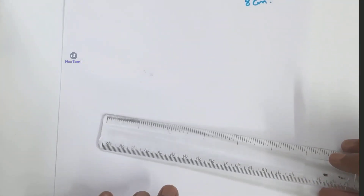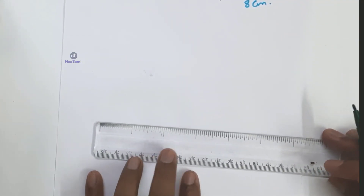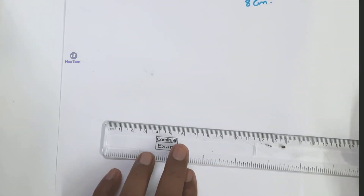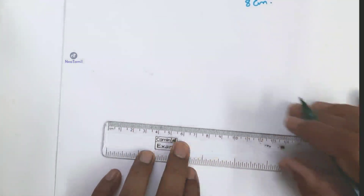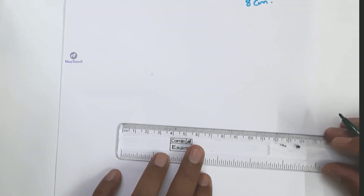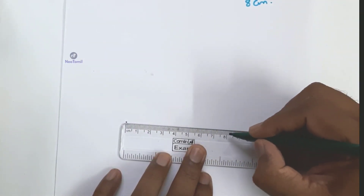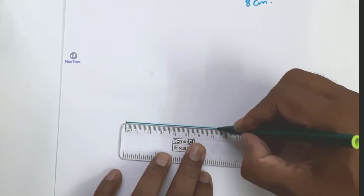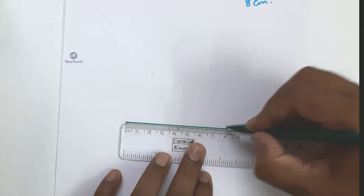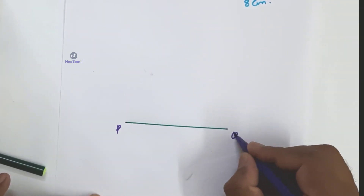Now we start to draw. Step 1: Draw the baseline PQ equal to 8 centimeters. We draw P, then measure to 8 centimeters and mark Q.